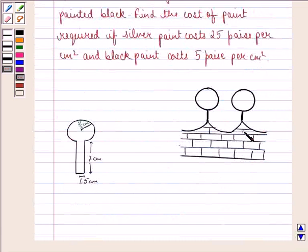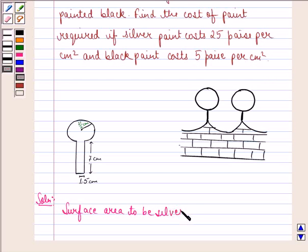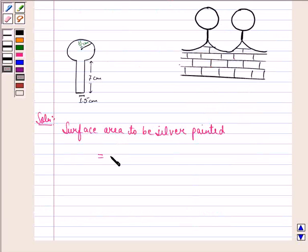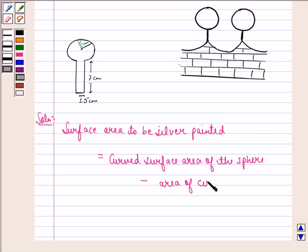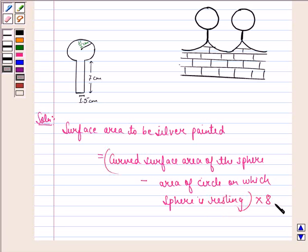So this is the figure given to us in the question. Let us start with the solution. Clearly we have to subtract the part of the sphere that is resting on the support while calculating the cost of silver paint. First of all we see that surface area to be silver painted is equal to curved surface area of the sphere minus area of circle on which sphere is resting, and this multiplied by 8 because there are 8 spheres.